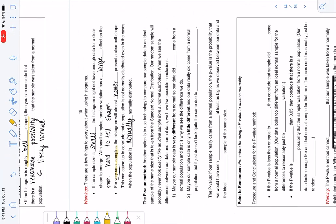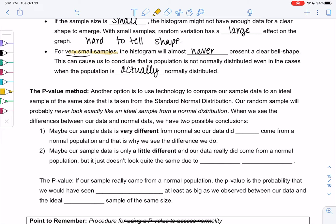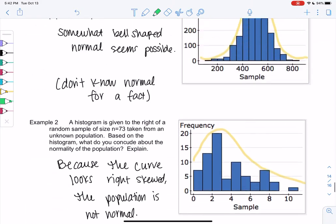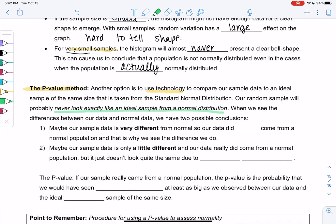The p-value method is a lot of words but it won't be too much work. The p-value method uses technology to compare our sample with an ideal normal sample of the same size taken from the standard normal distribution. So what it does is it compares our data to a perfect normal curve. Our sample will probably never look exactly like an ideal sample from a normal distribution. It was pretty bell-shaped but it wasn't perfect. So the p-value is measuring this. When we see differences between our data and normal data there's two conclusions.